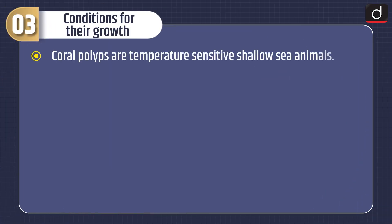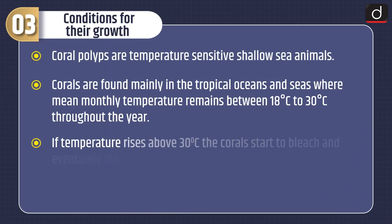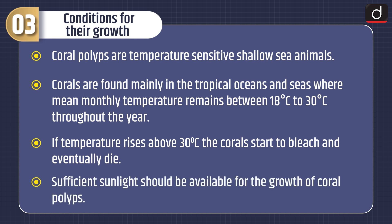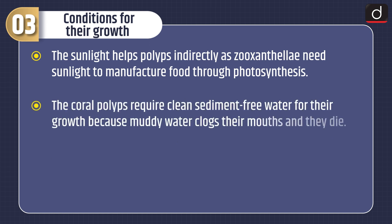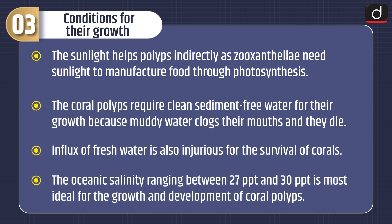Now let's have a look at conditions for their growth. Coral polyps are temperature-sensitive shallow sea animals. Corals are found mainly in tropical oceans and seas where mean monthly temperature remains between 18°C to 30°C throughout the year. If temperature rises above 30°C, the corals start to bleach and eventually die. Sufficient sunlight should be available for the growth of coral polyps. This sunlight helps polyps indirectly, as zooxanthellae need sunlight to manufacture food through photosynthesis.